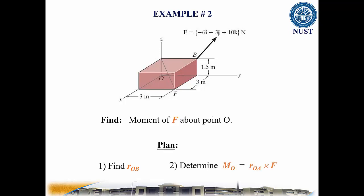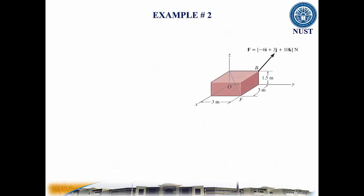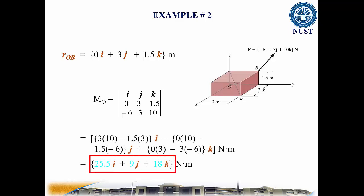So, to find the position vector R_OB, see the point of force application B with respect to O. The position vector turns out to be 0i plus 3j plus 1.5k meters. Then finding the moment by using the cross product of position vector and force, and this results in 25.5i plus 9j plus 18k Newton meters.